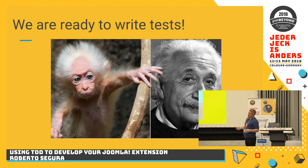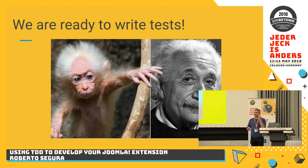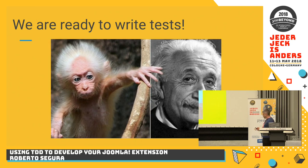So with maybe a bit of confusion, it's just four stages: clone Joomla, create the composer.json file, create the bootstrap file, and run composer install. It's quite easy — you don't need to be Einstein, or even a monkey.